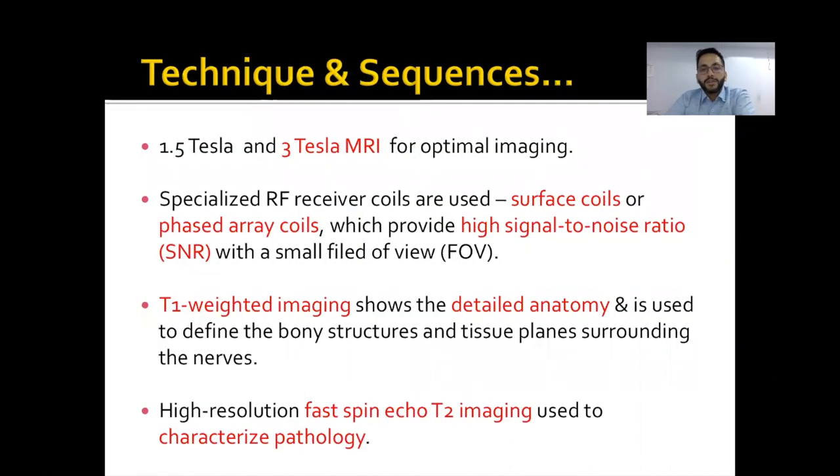The fundamental technique of brachial plexus imaging and the sequences that we take, both 1.5 tesla and 3 tesla are good. But as we know, 3 tesla scores over 1.5 tesla in terms of better signal-to-noise ratio and availability of newer 3D imaging sequences. We use specialized RF coils. Surface coils or phased array coils are used. T1-weighted images are good to show detailed anatomy and they are used to define the bony structures and tissue planes surrounding the nerves.